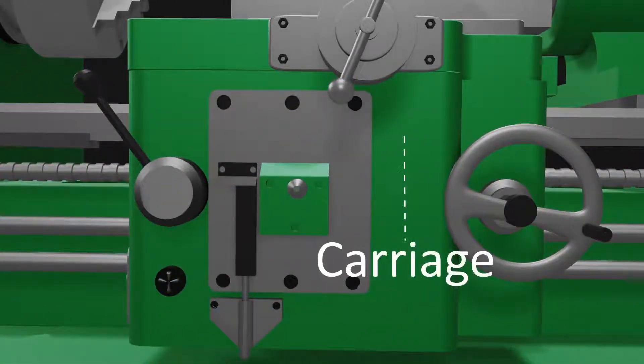Carriage. This is composed of a saddle and an apron and is used as a mount to the cross slide.